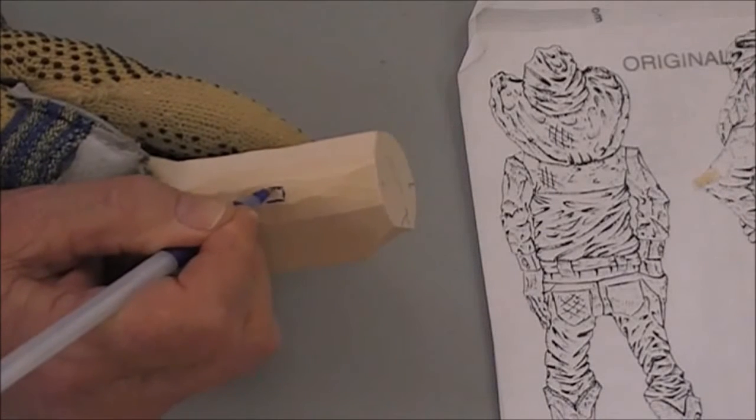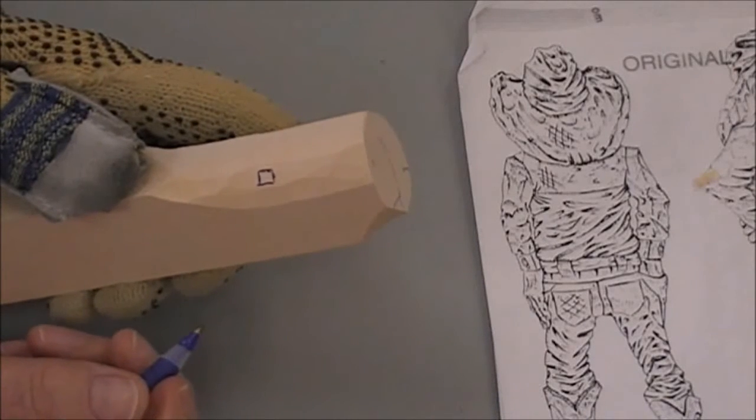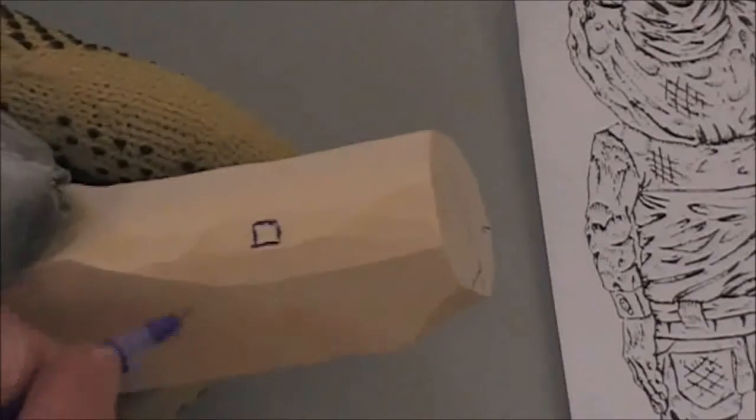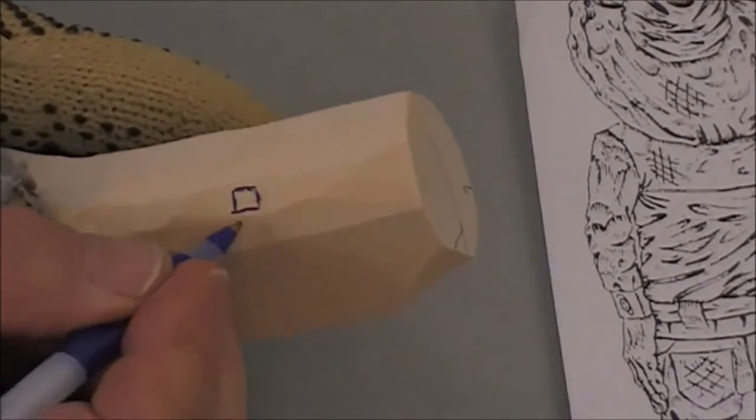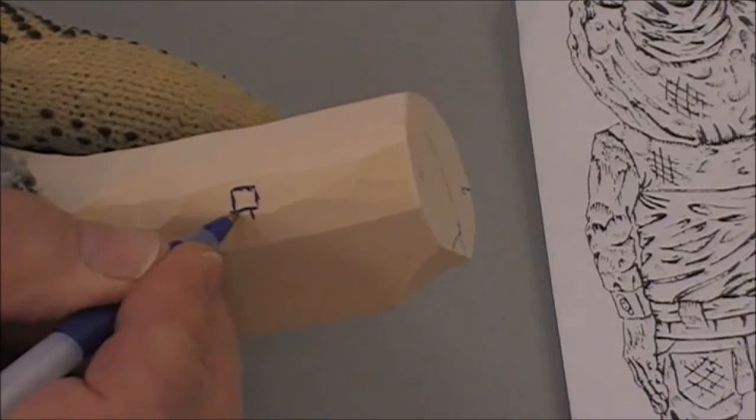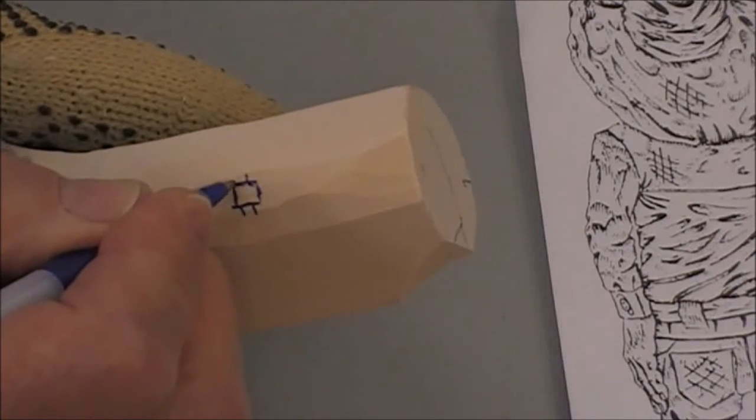Let's draw that in to start with and it can be whatever size or whatever shape you want. And so then from that we've got to take the belt out and of course it's going to be narrower than the belt buckle.